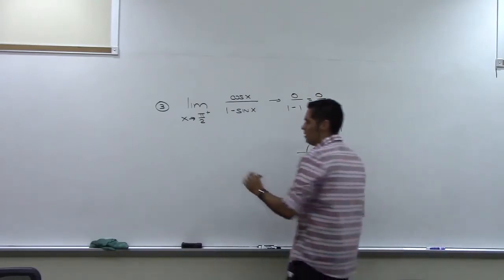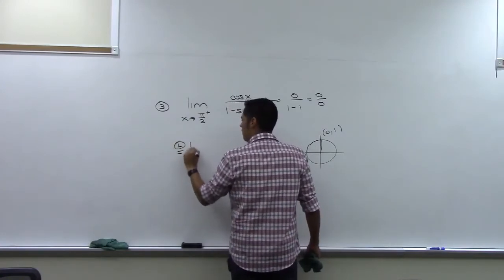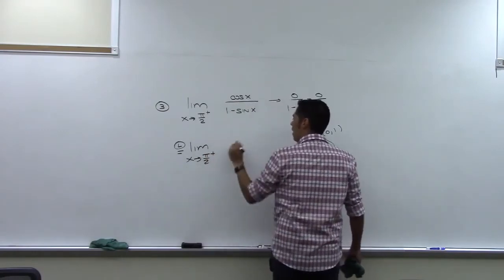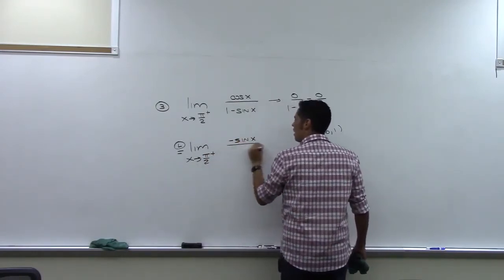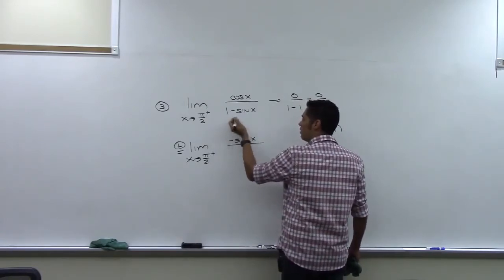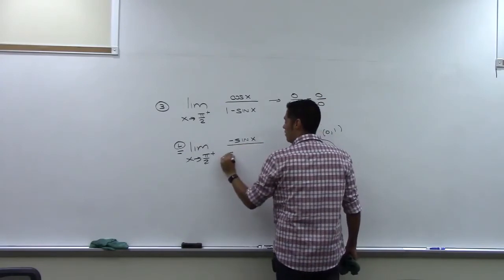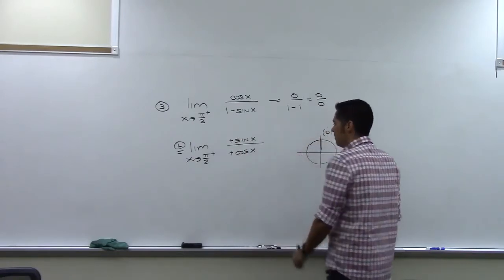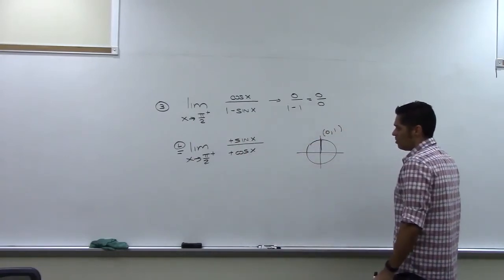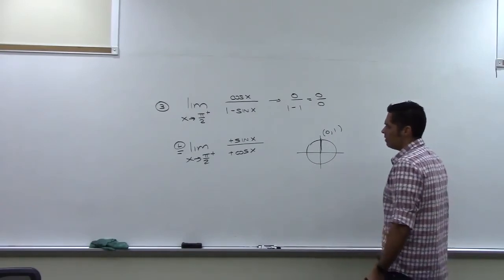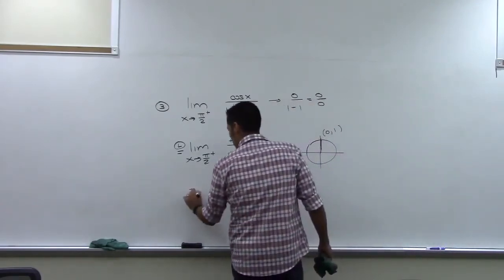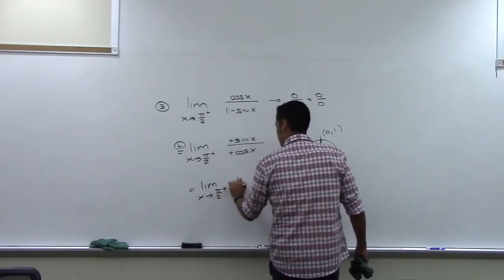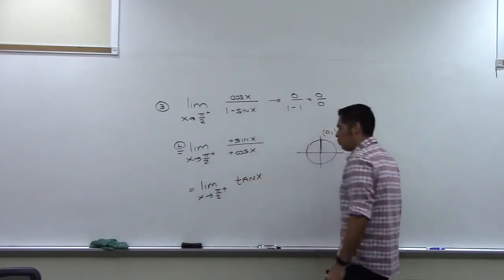We have what we need to apply L'Hôpital's rule. The derivative of the top is negative sine x, and the derivative of the bottom: the derivative of one is zero, and the derivative of negative sine x is negative cosine x. The negatives cancel, giving us sine x over cosine x. We can rewrite this as tangent x, which will be a little easier to work with.